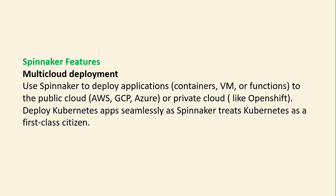The first key feature is multi-cloud deployment. We can use Spinnaker to deploy applications, containers, VMs, or functions to public clouds such as AWS, GCP, and Azure, or private clouds like OpenShift. We can also deploy Kubernetes apps seamlessly, as Spinnaker treats Kubernetes as a first-class citizen.